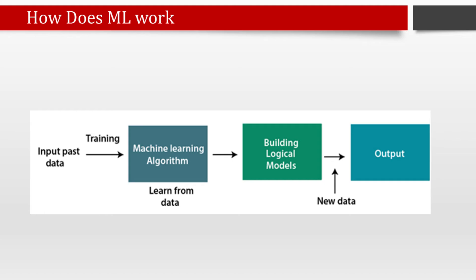A machine learning system learns from historical data, as mentioned earlier. The accuracy of the predicted output depends upon the amount of data — a huge amount of data helps to build a better model which predicts output more accurately. For a complex problem where we need to make predictions, instead of writing code for it, we just need to feed data to generic algorithms. With the help of these algorithms, the machine builds the logic as per the data and predicts the output. Machine learning has changed our way of thinking about problems.